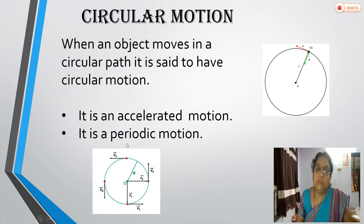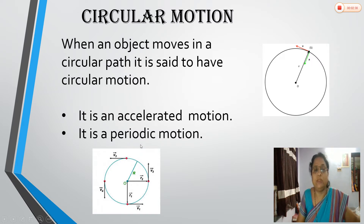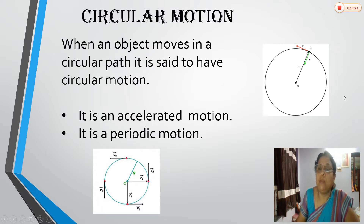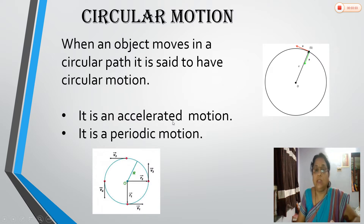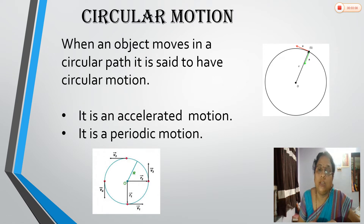The second property of circular motion is that it is a periodic motion. Periodic means a phenomenon that repeats after equal intervals of time. In circular motion, the object moves along a circular path and repeats the same motion again and again. The motion of the Earth around the Sun is a best example — all planets moving around the Sun is an example of circular motion.